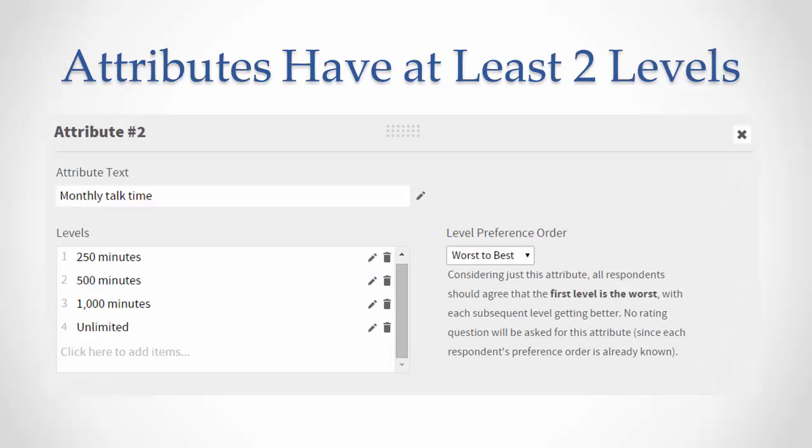Consider a different attribute, monthly talk time. We'd refer to this as an ordered attribute, since everyone would agree that having more talk time per month was better than less. For ordered attributes like talk time, speed, or price that are described using sequential amounts, we generally recommend using about three to five levels, covering the full range that is realistic for the marketplace and that you need to include in your study to answer the business questions that matter.